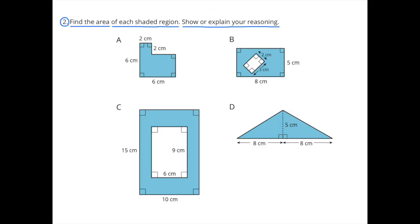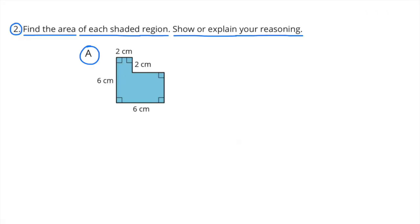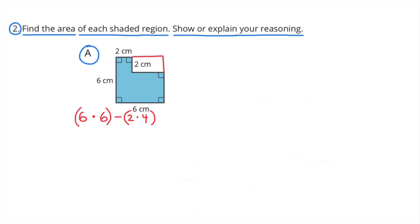Number 2. Find the area of each shaded region. Show or explain your reasoning. A. This shape is almost a square. Imagine it is a square that's 6 by 6 and it's missing a section that's 2 by 4. The area of the shaded region is 28 square centimeters.